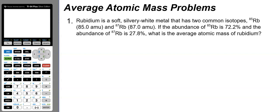We're given isotope abundance information and mass values, and we need to use that abundance data to determine the average atomic mass of rubidium. Remember, average atomic mass is a weighted average, so we can't just add up the two masses and divide by two. We have to use the isotope abundance percentages to find the weighted average. The mass will be somewhere between 85.0 amu and 87.0 amu.